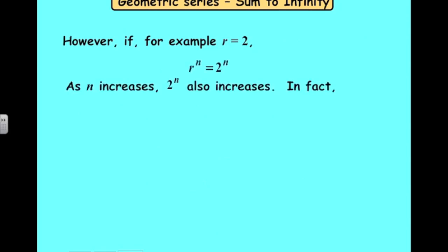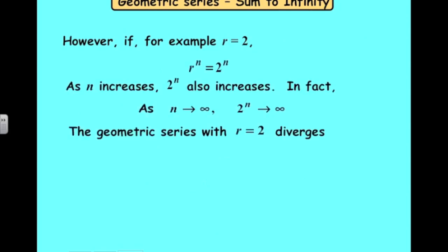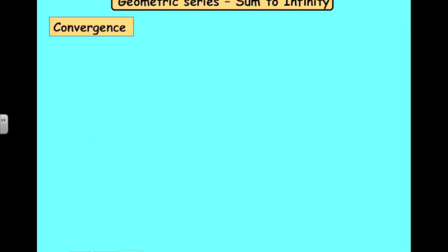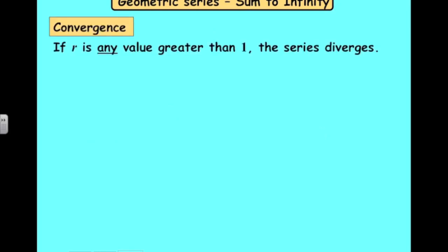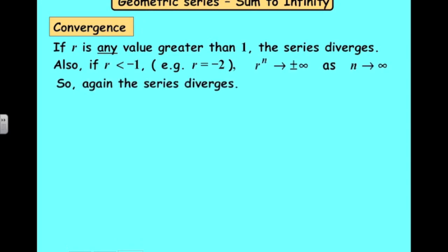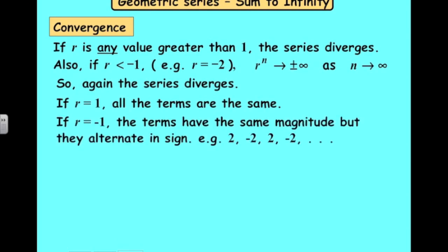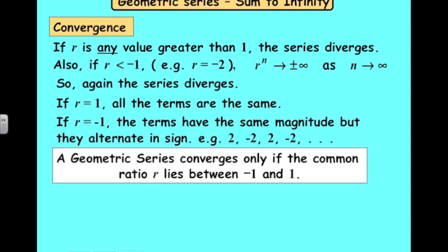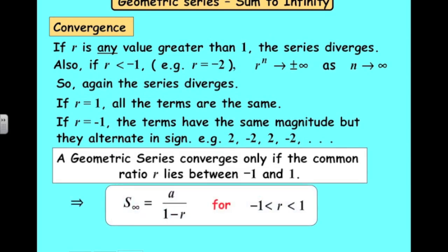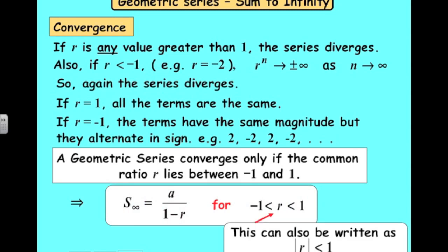If r equals two, this doesn't work — the sequence has no sum to infinity because two to the power of n tends to infinity as n tends to infinity. The sum to infinity only exists when r is between minus one and one; that's the only condition under which the sequence converges.